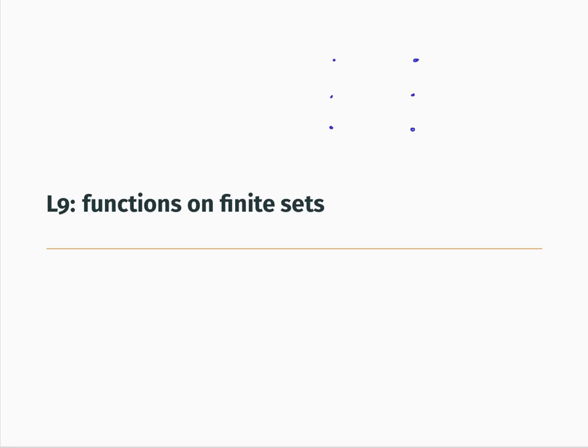Now suppose that this function is one-to-one, which means that every one of those arrows must have a different target. For example, we might send the first dot here, and the second dot here, and then the last dot must go here. In this case there must be three different targets, and if there are three different targets, then everything is a target. So if this function is one-to-one, then it's also onto.